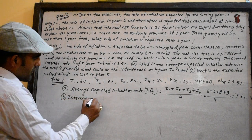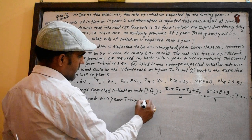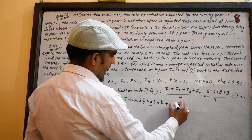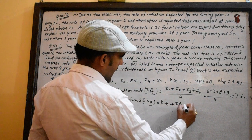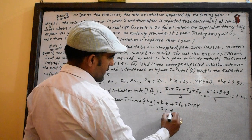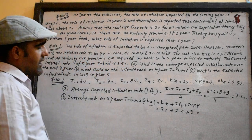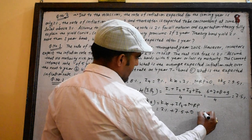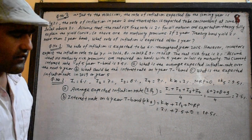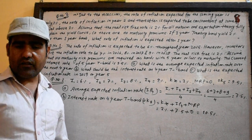What should be the interest rate on a 4-year T-bond? The nominal interest rate on a 4-year T-bond: k-star plus IP4 plus MRP. k-star is 3%, IP4 is 7.5%, MRP is 0. This gives 10.5%. So for a 4-year bond, every year the return is 10.5%.